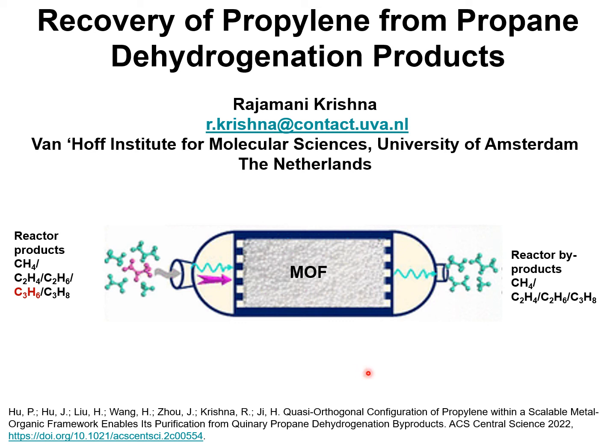Propylene is an important feedstock used in the production of polymers such as polypropylene and oxygenates such as acetone and propylene oxide. There is expected to be an increasing demand for propylene, rising to about 130 million metric tons by 2023.